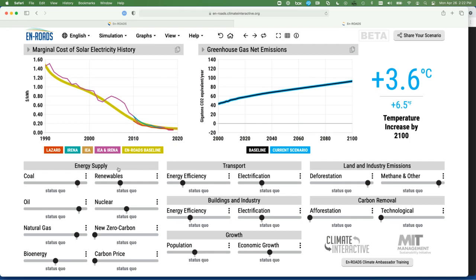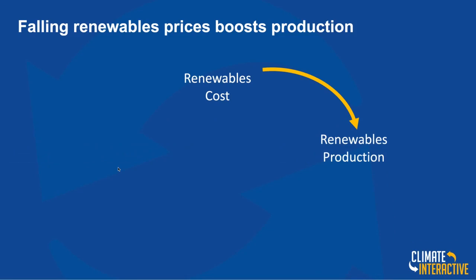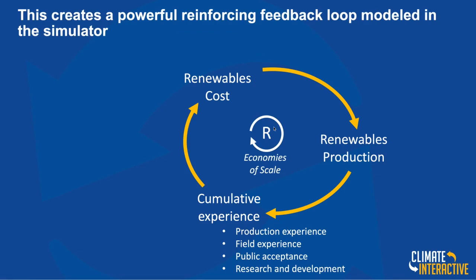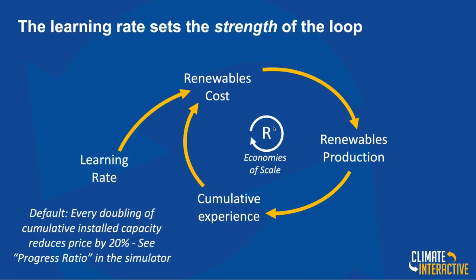We capture this using system dynamics and systems thinking in a causal loop diagram. Falling renewable prices boost production — you see the cost come down, renewable production goes up. That leads to more cumulative experience: production, field experience, public acceptance (is it okay to have a solar panel on your roof?), research and development making better and better technologies. Then the cumulative experience brings the cost down.